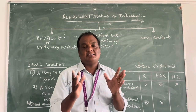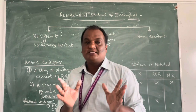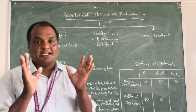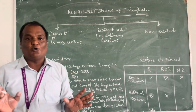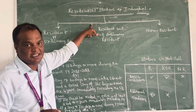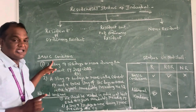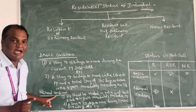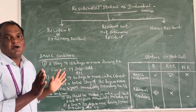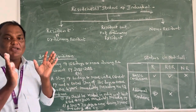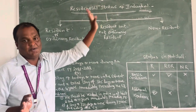The determination of residential status is based on certain rules. There are two rules to be followed for determining the residential status. The first rule is the Basic Condition. The second rule is the Additional Condition. These two rules are most important to determine the residential status of an individual.